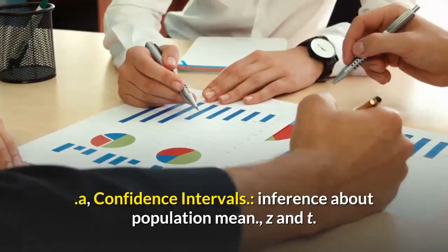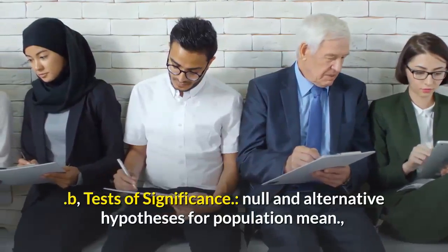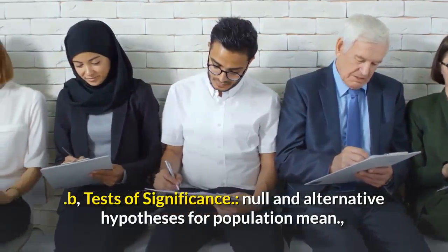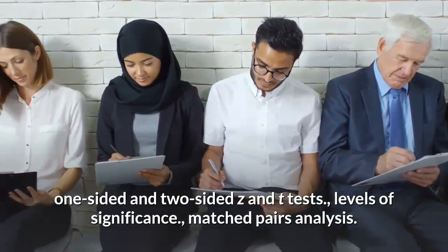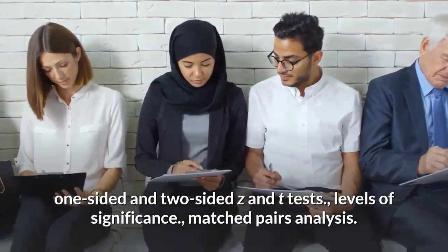Inference about population mean, Z and T. B. Tests of significance: null and alternative hypotheses for population mean, one-sided and two-sided Z and T tests, levels of significance, matched pairs analysis.